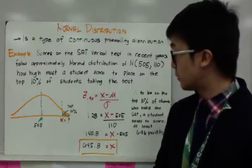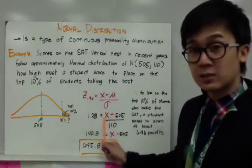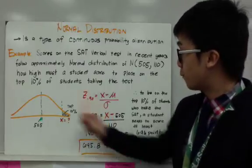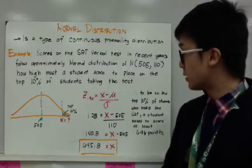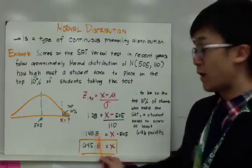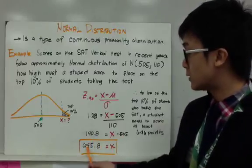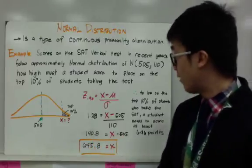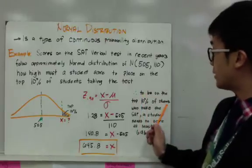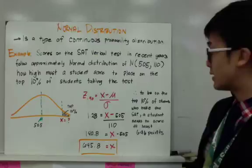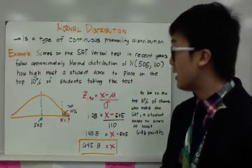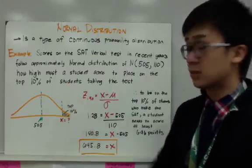Now, using algebra, we'll be able to isolate X so we can solve for this problem. So get rid of 110 by multiplying 110 on both sides. You'll get 140.8. Add 505 on both sides, so X is equal to 645.8. Therefore, to be on the top 10% of students who take the SAT, a student needs to score at least 646 points to be able to satisfy this condition.